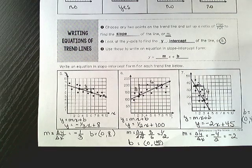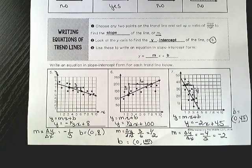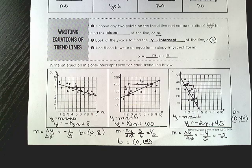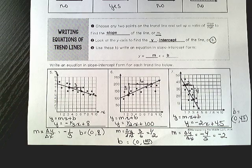So you are going to be finding an equation from a trend line by connecting two points that you can easily identify, connecting those two points, making our triangle, counting them, and finding the change in y over the change in x.